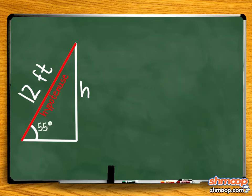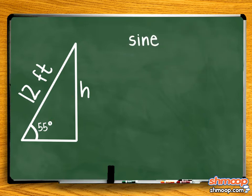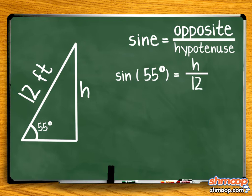We know the length of the hypotenuse of the triangle and the angle. We want to find the length of the opposite side to the angle, so we can use the sine function to help us. The sine function tells us that the ratio is the opposite side of the triangle over the hypotenuse. Plugging in what we know: sine of 55 degrees equals H, the opposite side, over 12, the hypotenuse.